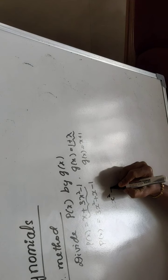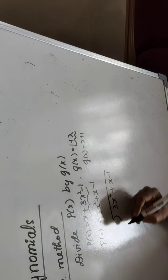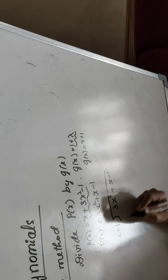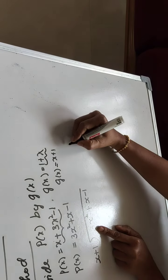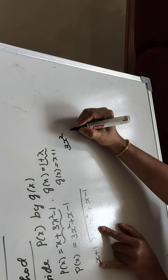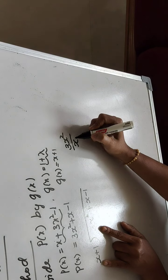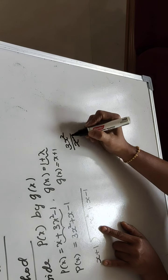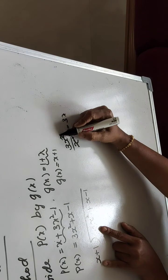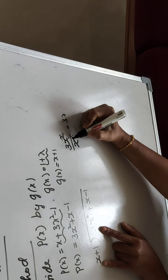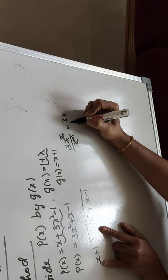Now we do the division. Listen carefully: take the first term of p of x and divide by the first term of g of x. 3x squared divided by x — the powers subtract since the bases are the same: 2 minus 1 gives power 1. So 3x remains as the result.